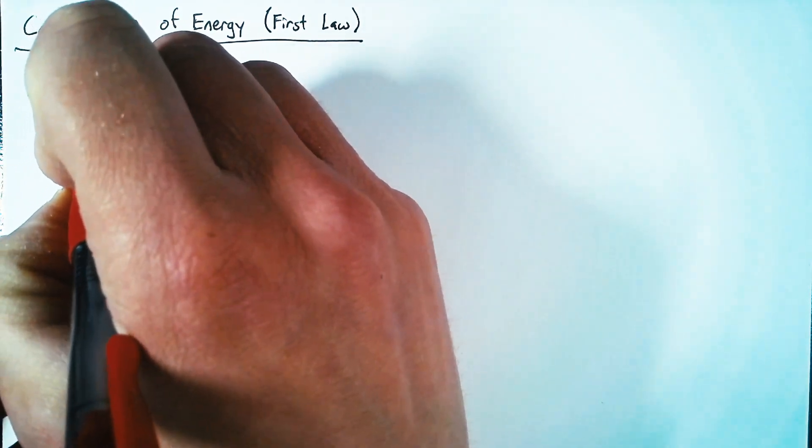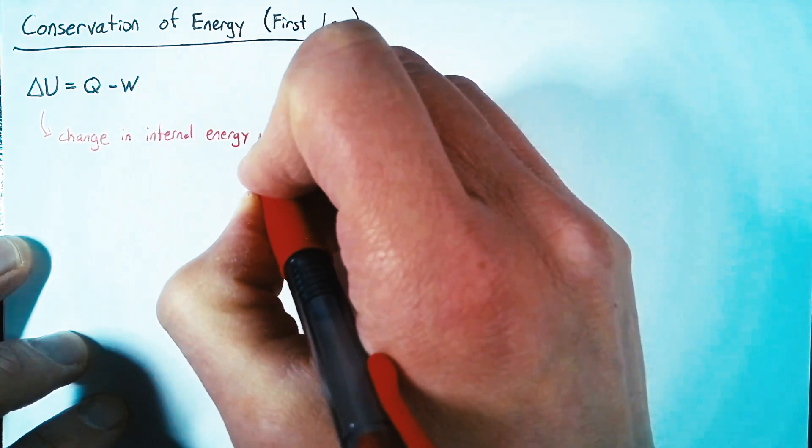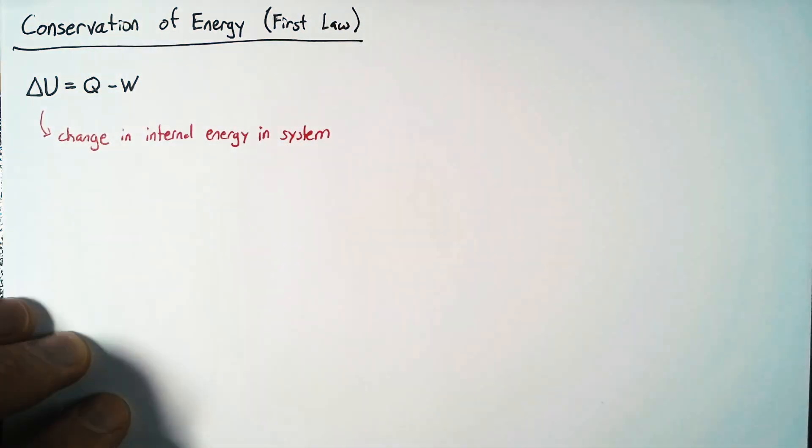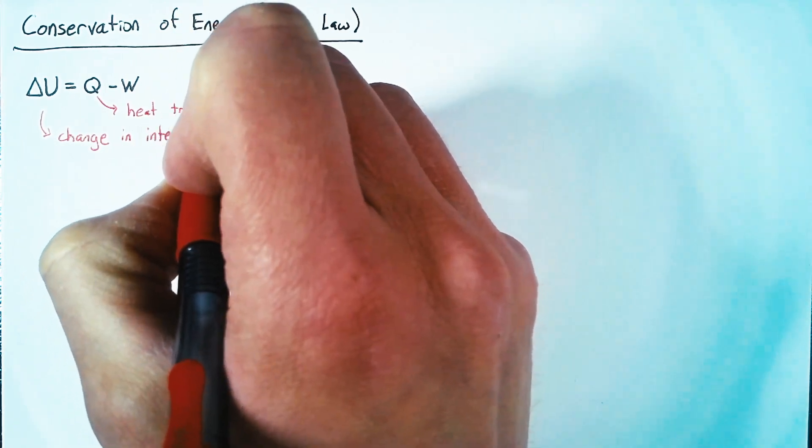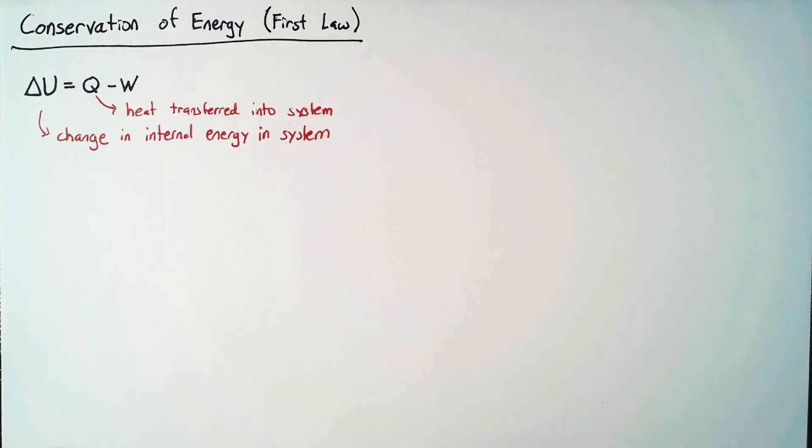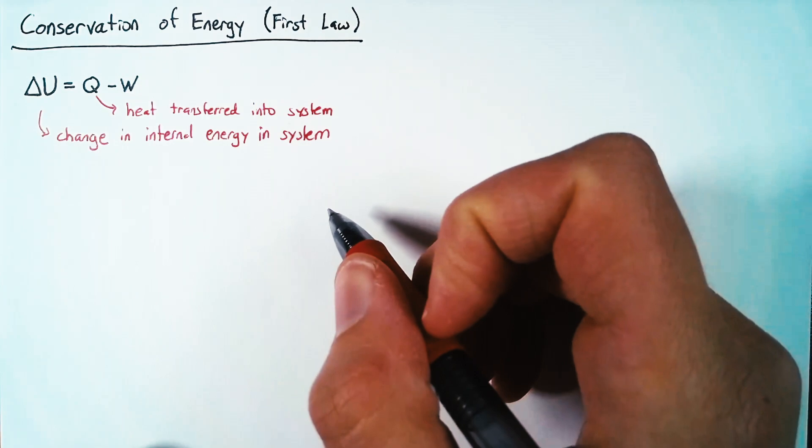This delta U is a change in the internal energy inside our system. This Q is the heat transferred into the system. Heat transfer occurs in methods such as conduction, convection, or radiation. We're not going to deal with the details of that heat transfer today. We're just going to say that in some method, heat is being transferred into our system.